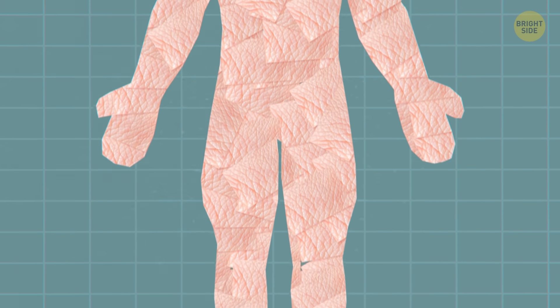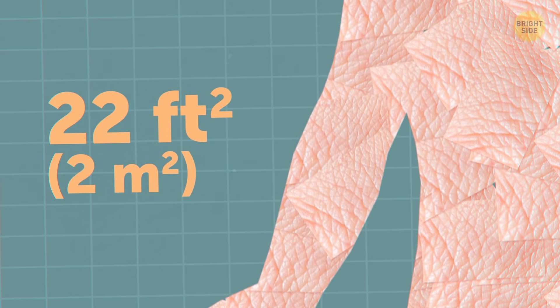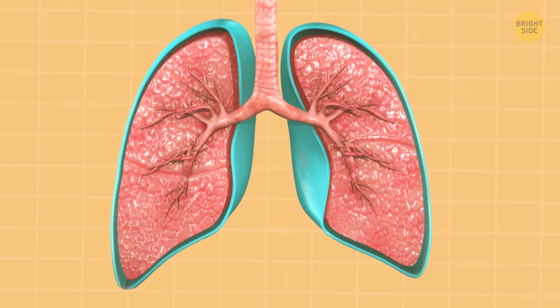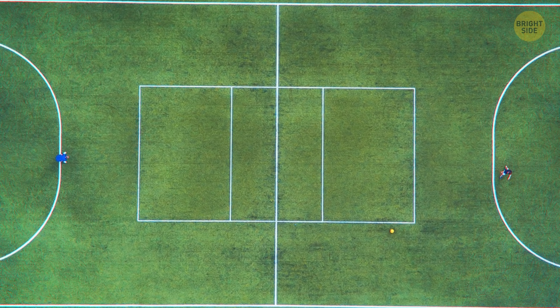But your largest organ is your skin. The average adult is covered with about 22 square feet of the stuff. It's bigger than a twin-sized mattress top. If you could take all the surface area in your lungs and flatten it out, it'd be the size of a tennis court.